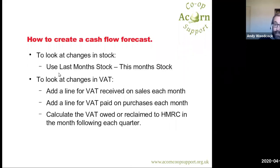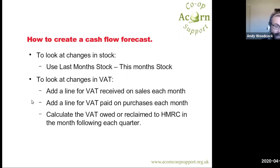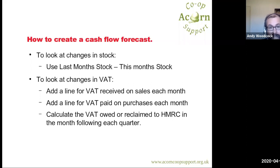To summarise the key formulas: for changes in accounts receivable, use last month's accounts receivable minus this month's accounts receivable. For changes in accounts payable, use this month's accounts payable minus last month's accounts payable. For changes in stock, use last month's stock subtracted from this month's stock — this means that if there is more stock this month, you have a negative cash effect, which is what you want. Then make changes for VAT. I would suggest it's too complicated to have a single line for VAT alterations — it's easier to separate them out into VAT received on sales each month, VAT paid on purchases, and VAT owed to or reclaimed from HMRC in the month following each VAT quarter.